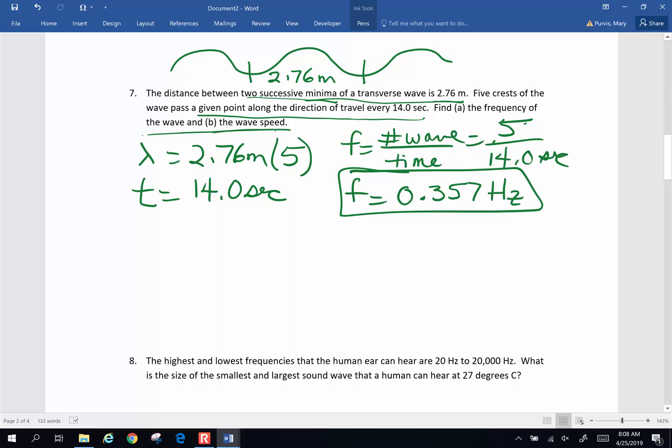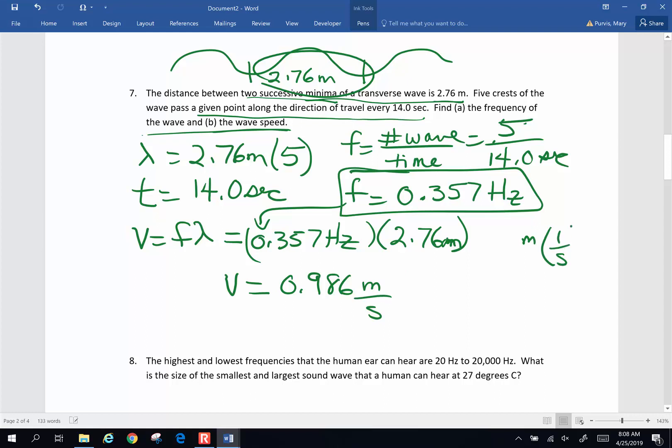And part B says, what is the wave speed? Well, wave speed is frequency times wavelength. Frequency from up here is 0.357 hertz. Wavelength from up here is 2.76 meters. When I multiply those together, the velocity is going to be 0.986 meters per second. This is meters times hertz. Hertz is one per second. And I end up with meters per second.